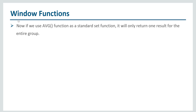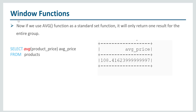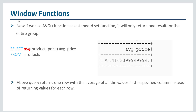Now if we use the average function as a standard aggregate function, it will only return one result for the entire group. The query would be: select average of product_price from products. This query returns only one row — the average of all values in the specified column — instead of returning values for each row. This is the difference between a windowing function and other analytical functions.